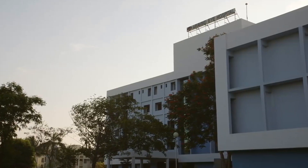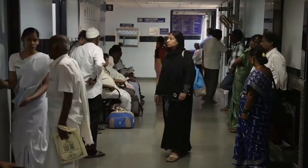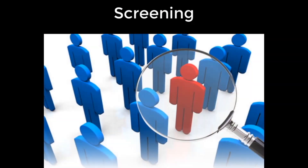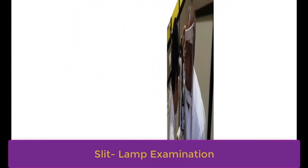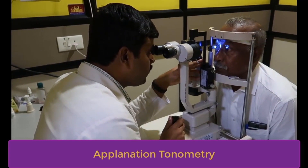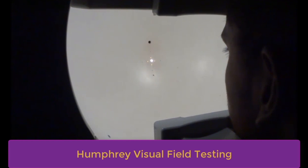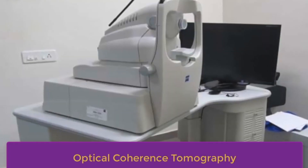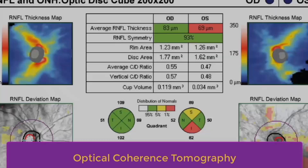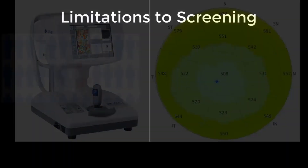Early detection can delay the progression of glaucoma. Hence, the time has come to emphasize glaucoma screening. Glaucoma detection is mainly performed using a 90D lens for fundus examination, applanation tonometry for intraocular pressure measurement, gonioscopy to visualize angle structures, Humphrey field analyzer for analyzing visual fields, optical coherence tomography for seeing optic nerve head changes, and pachymetry for measuring central corneal thickness.